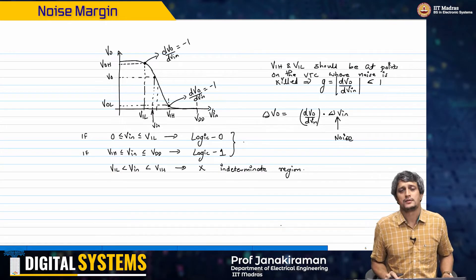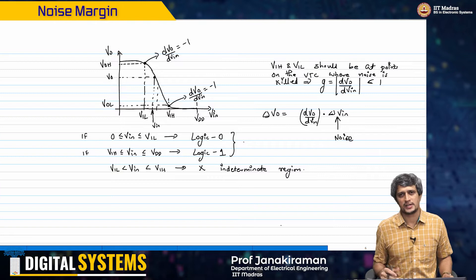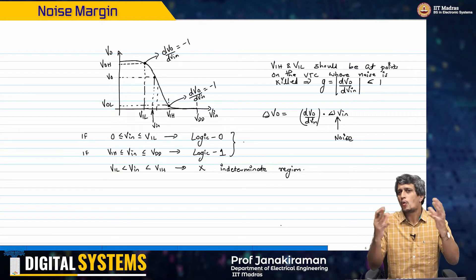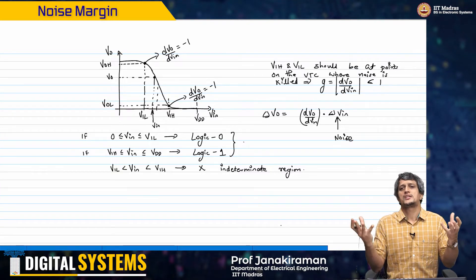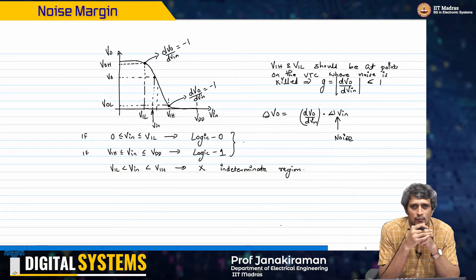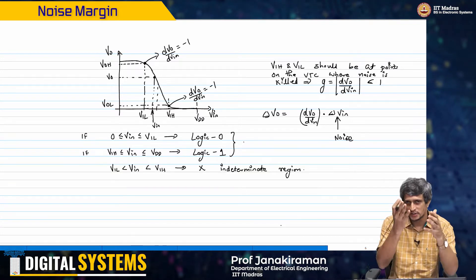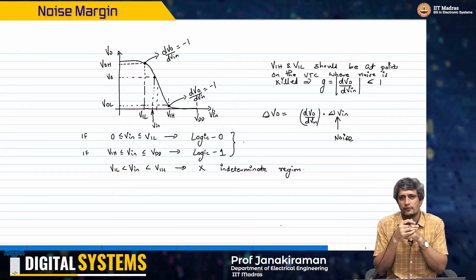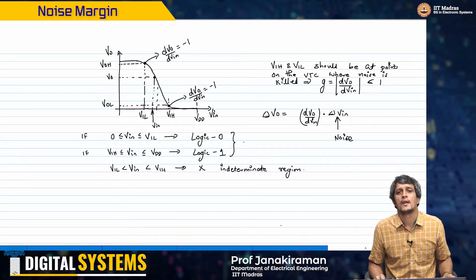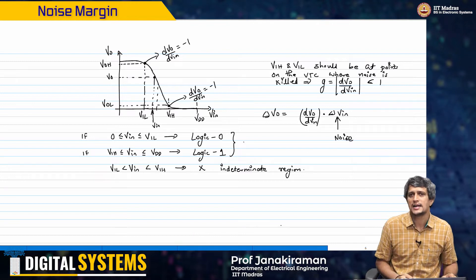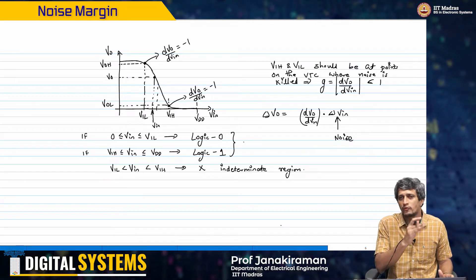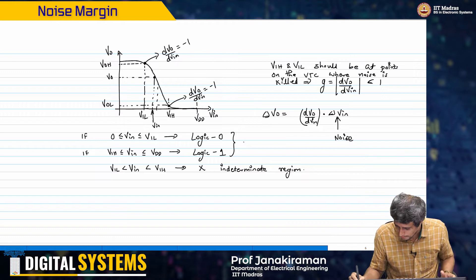Now the question is, having defined these things, can I quantify how much noise I can add to this logic gate with the definitions we have done? How much noise can I add and still be sure that my output will be propagated correctly?